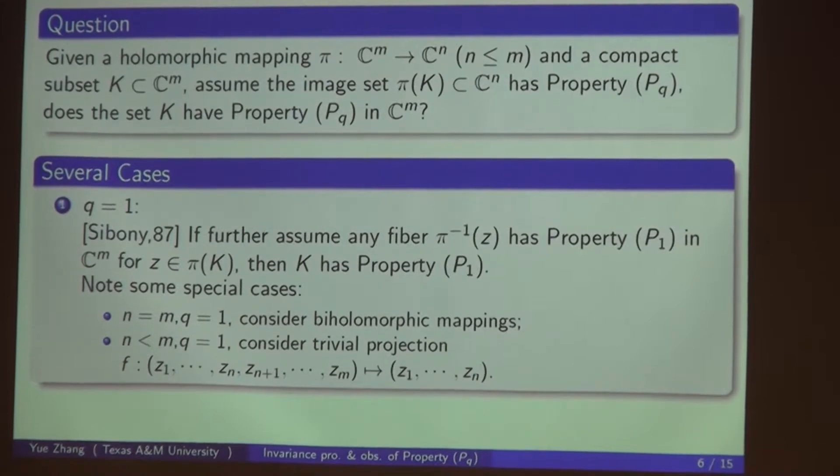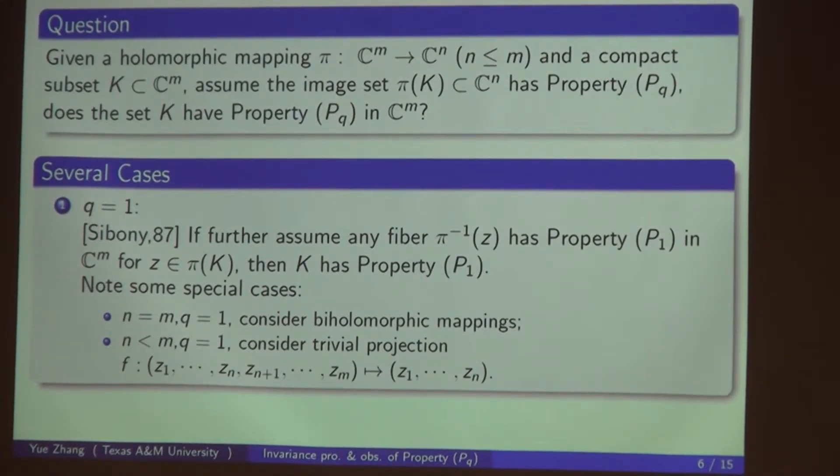There are some special cases. The first special case is m equal to n, the mapping is in the same dimensional space, and q equal to 1. If you consider pi to be a biholomorphic mapping, then there's no need to assume anything on the fiber. You take a compact subset K and map it; if the image set has property P_Q, then the original set automatically has property P_Q.